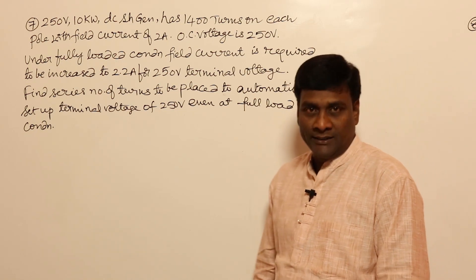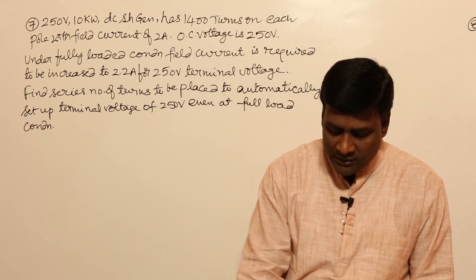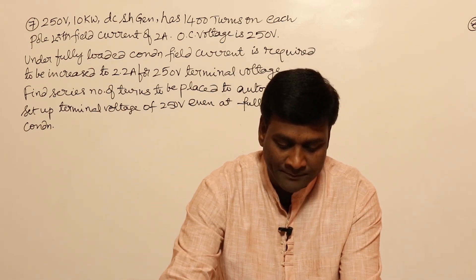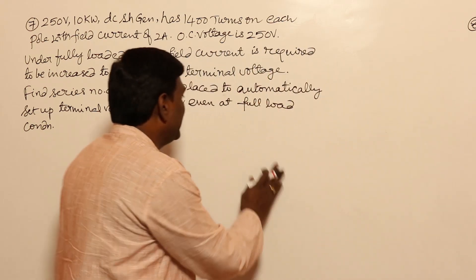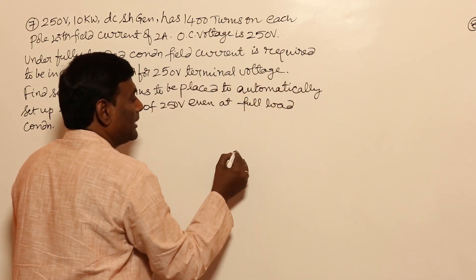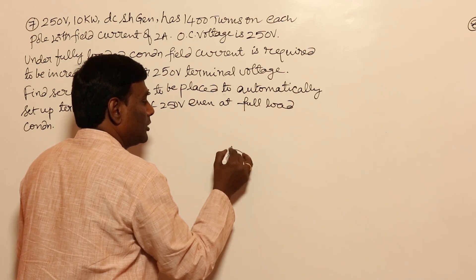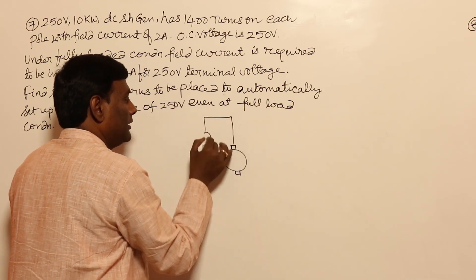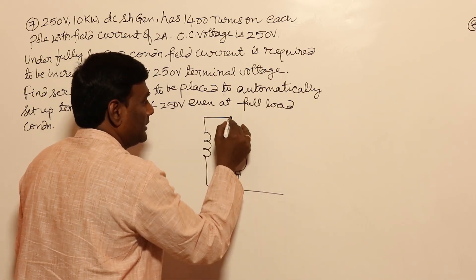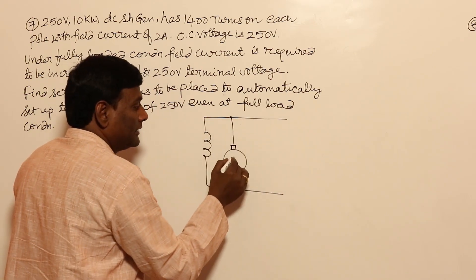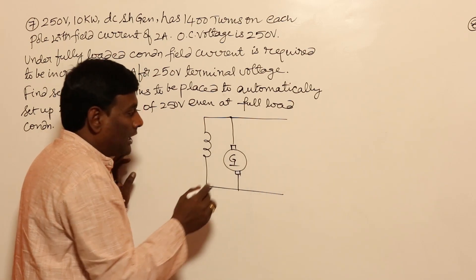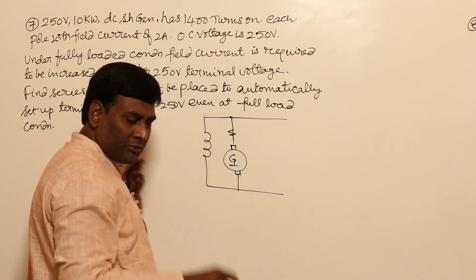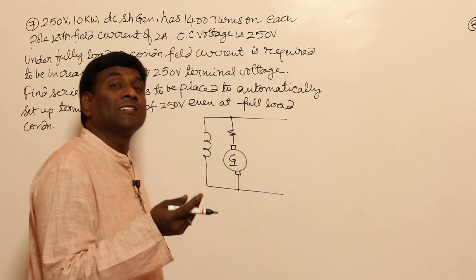This is technically called a level compounded generator. In a DC shunt generator, there is an armature resistance, and internally because of armature reaction the net flux per pole will be reduced.